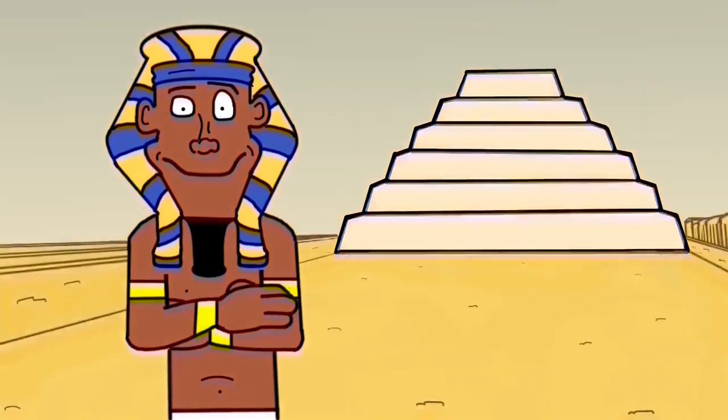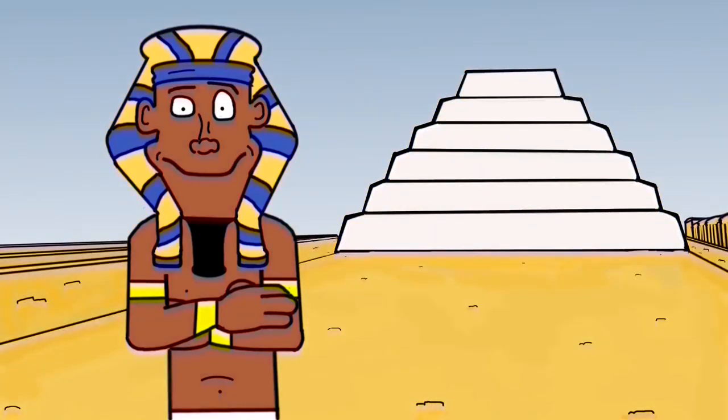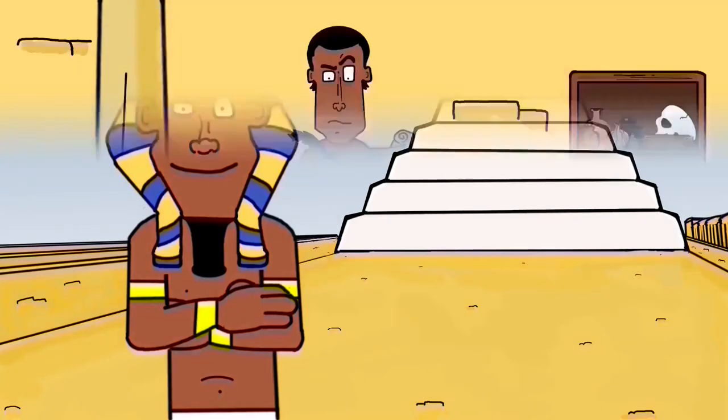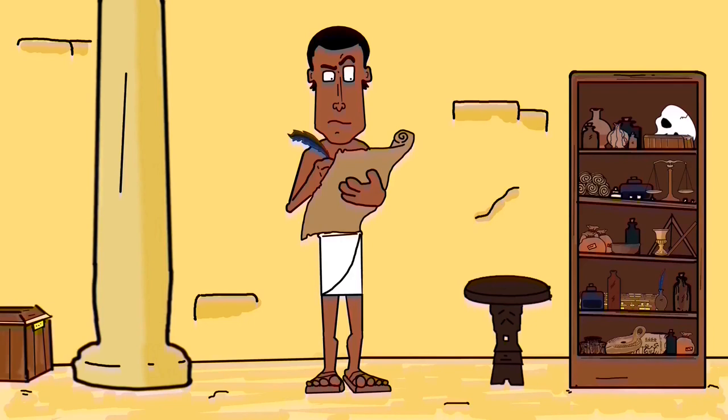Djoser's pyramid rises to a height of 204 feet, and as far as we know, the largest stone building on earth at that time. However, credit should also go to Djoser's master builder, Imhotep. Imhotep seems to have been the master of many skills and bore many titles.